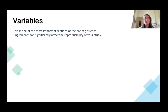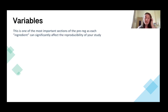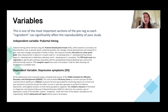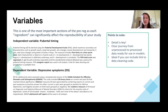Variables is one of the most important sections of the pre-registration. The detail in this aspect can significantly affect the reproducibility of your study. Often this is where a lot of research studies fall down, because there just isn't enough detail for someone to follow your recipe and try to reproduce your study. For example, I'm telling the reader my independent variable is pubertal timing and my dependent variable is depressive symptoms. There's quite a lot of text here, but I wanted to include as much as possible to give you an indication of how much detail you might want to include.